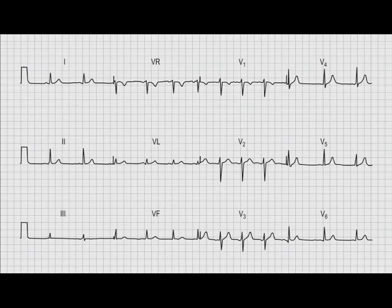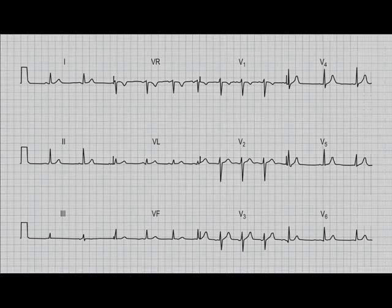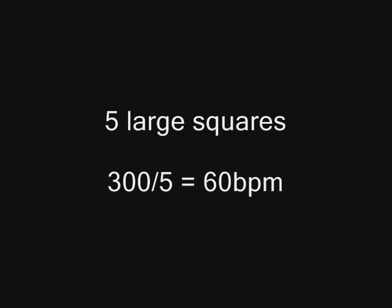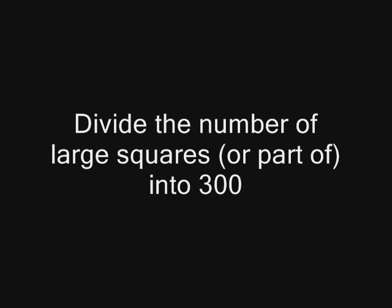If you want to know the heart rate, take the patient's pulse, and usually the rate is also printed on the 12-lead. But if not, you can work it out from the complexes. Count the number of large squares between the same two points on two adjacent complexes — normally the R-to-R interval. If there is one large square between R waves, divide into 300: the heart rate is 300. Two large squares: 150. Three: 100. Four: 75. Five: 60. Divide the number of large squares into 300, even if it isn't a whole number — for example, 3.2 or 4.8 large squares — just divide that figure into 300.